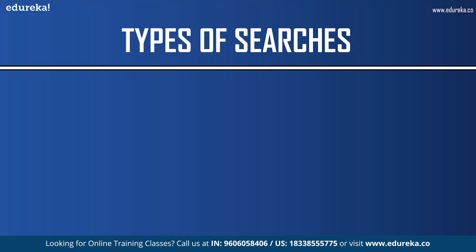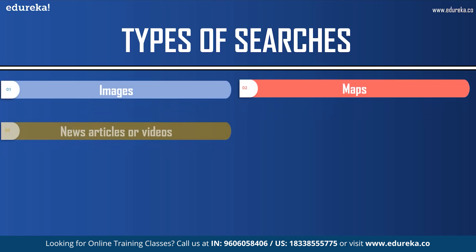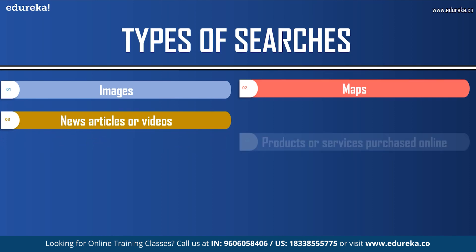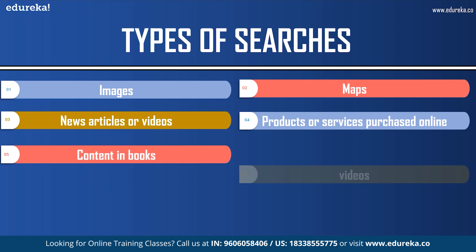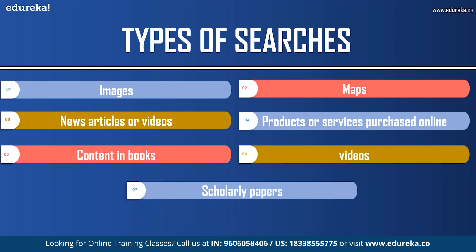Google can help you narrow down what you are looking for by choosing the type of search. You can browse through different categories that pertain to your keywords, including images, maps, news articles or video footage, products or services you can purchase online, content in books, videos, and scholarly papers. For example, if you search the term 'planet earth' in the news category, the results will include only news articles containing those keywords, and will look very different from Google's normal search results.